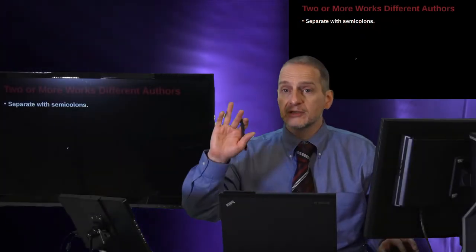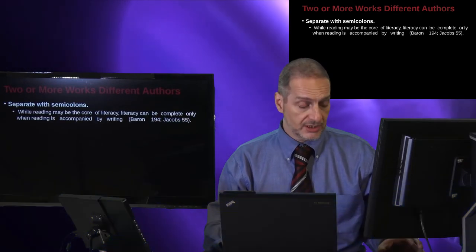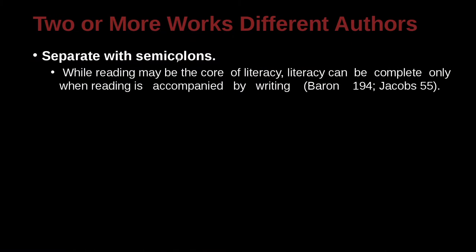What about two or more works from different authors — that is, two different research papers from two different people? How do we put them together in a sentence? For example: 'While reading may be the core of literacy, literacy can be complete only when reading is accompanied by writing.' Here we have Barron, 194; Jacobs, 55. The key separator is the semicolon — no space before, one space after. Barron 194 is the page number, and Jacobs 55 is the page number. That's how you put them together.